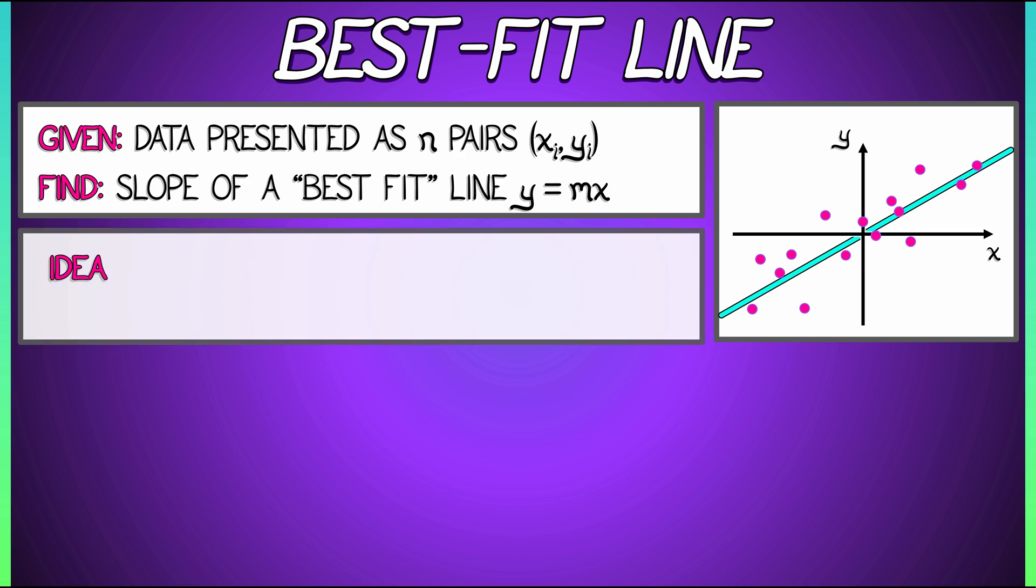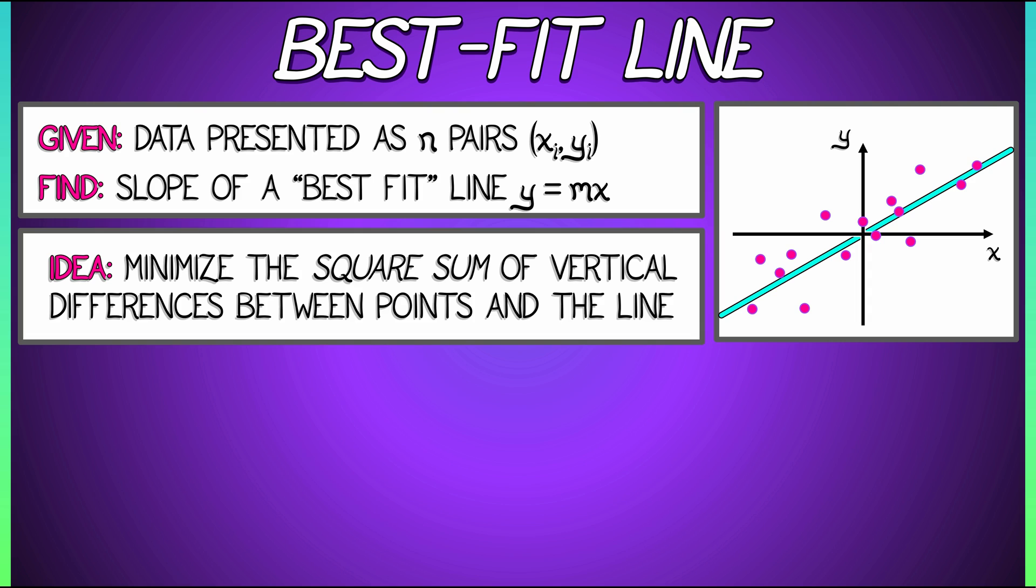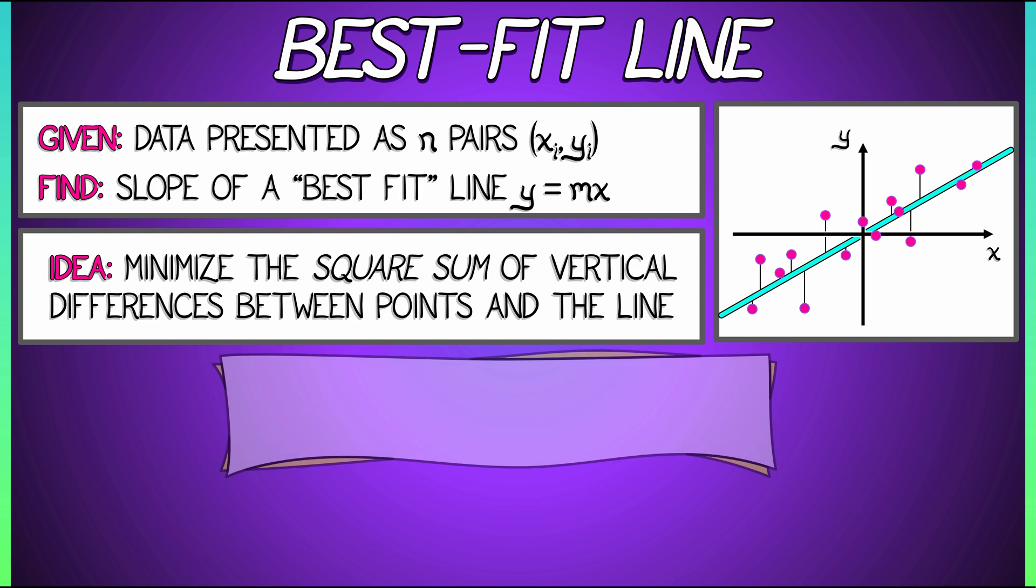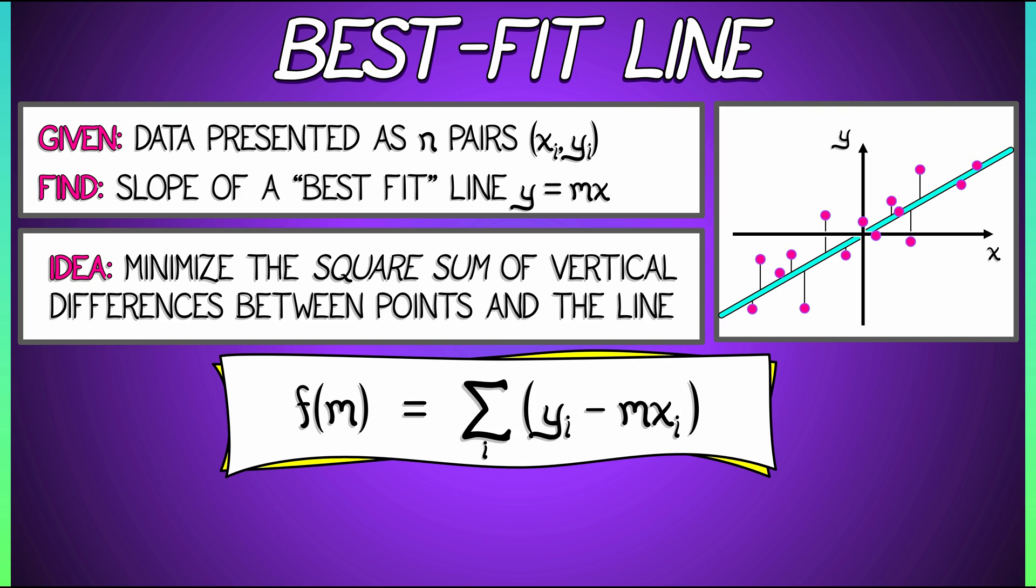What we're going to actually minimize is the square sum of the vertical differences between the points and the line. This is going to turn out to be a lot easier to work with than any other sort of notion. So let's define a function f as a function of m, the slope, that is given by the sum over i of quantity yi minus mxi squared.